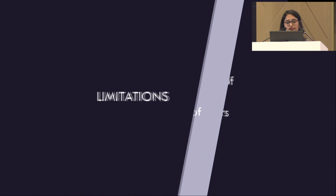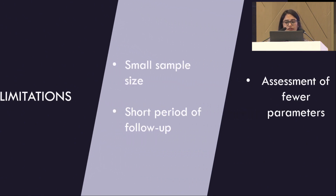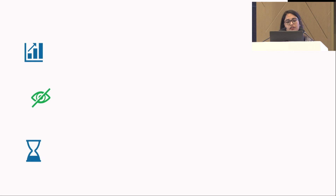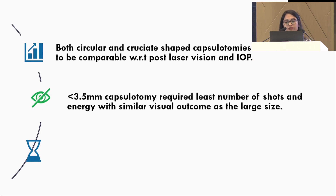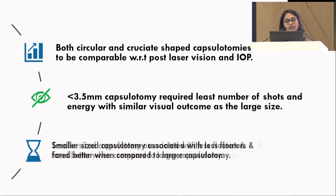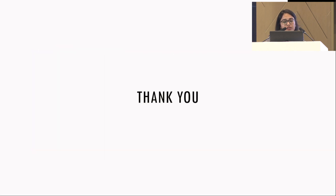We had the limitations of a small sample size, short follow-up, and assessment of fewer parameters. In conclusion, both circular and cruciate shape capsulotomies were found to be comparable. However, less than 3.5 mm capsulotomy required the least number of shots and energy with similar visual outcome as the larger size, and smaller capsulotomy was associated with fewer complications as well.